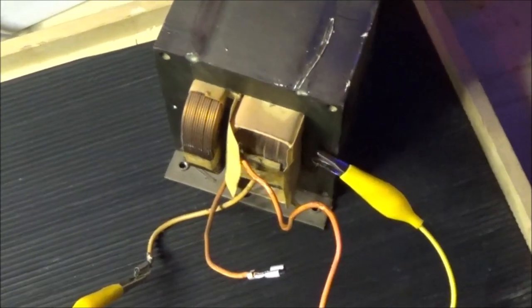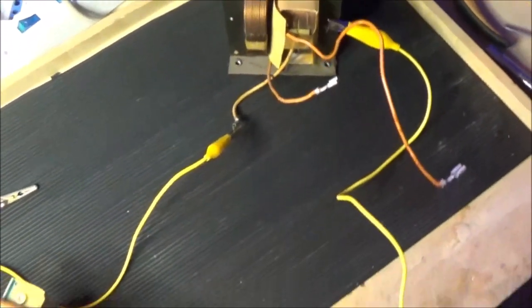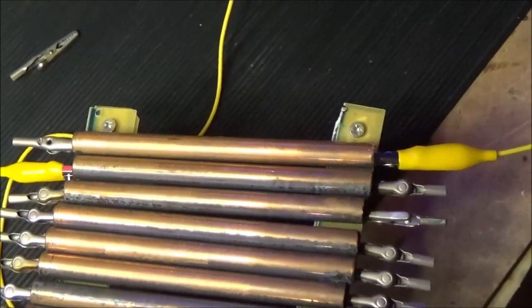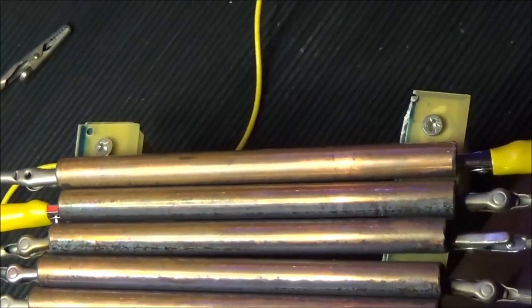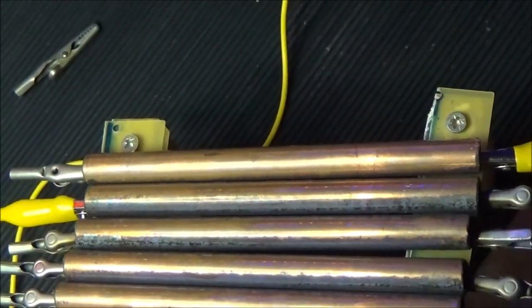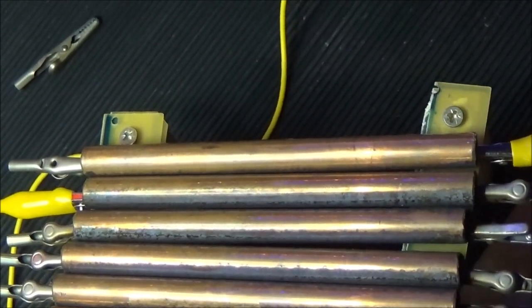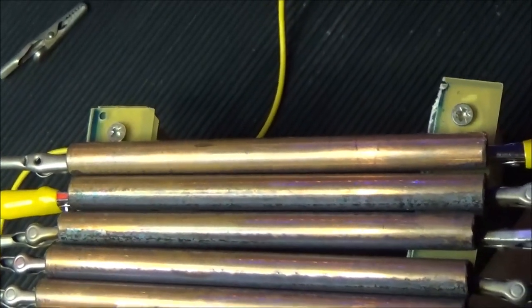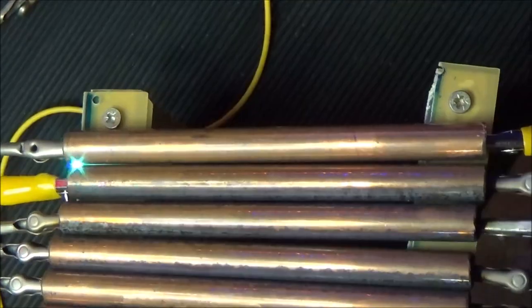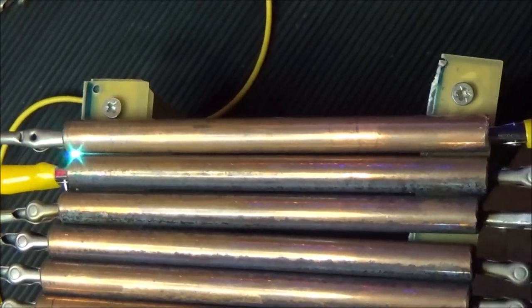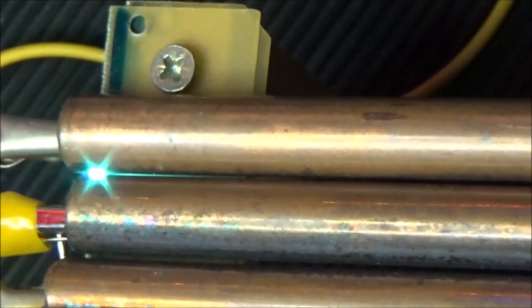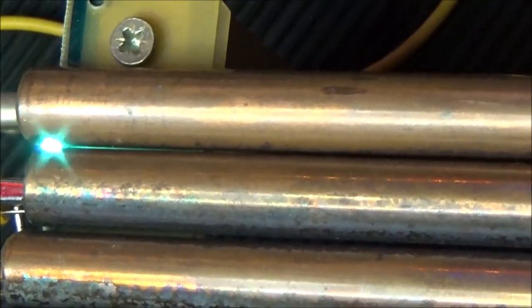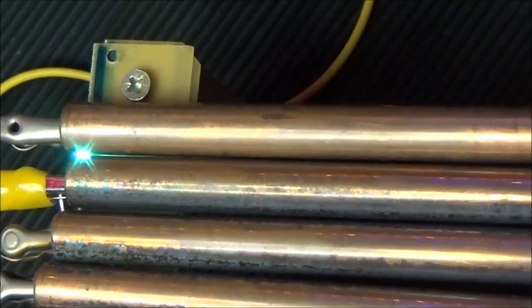In order to have bigger sparks, I use the spark gap of my Tesla coil that is built with different copper tubes and with a more elevated distance. We can see the little sparks between the two electrodes. The sparks are occurring where the distance is lower.